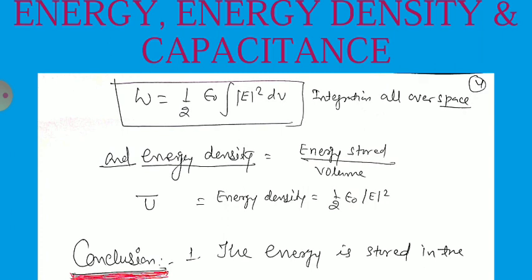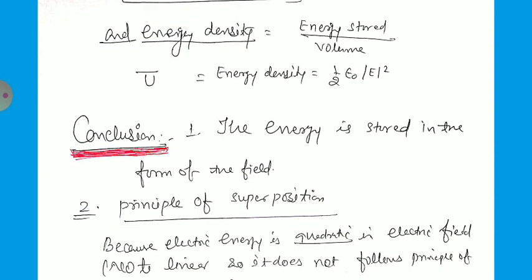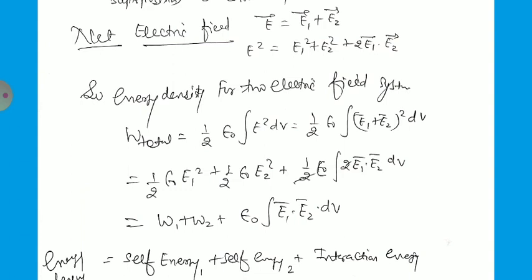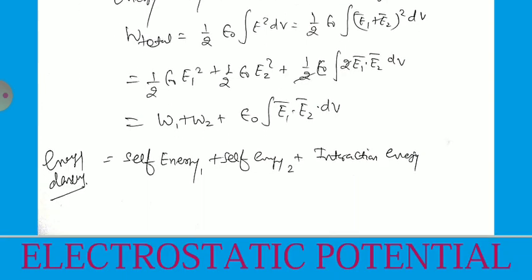This is the integration over all space, and the energy density is energy stored per unit volume: u = (1/2) ε₀ E². The conclusions are: energy is stored in the form of the field. The principle of superposition is not valid for energy because the energy is quadratic in E. If E = E_1 + E_2, then E² = E_1² + E_2² + 2 E_1·E_2. The energy density for the total system gives three terms — the first two are the self-energies of the first and second fields, and the third term is the interaction energy between the two electric fields.